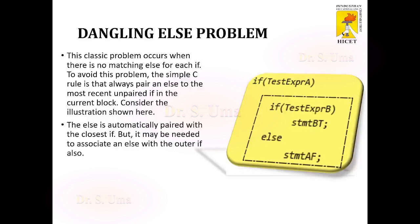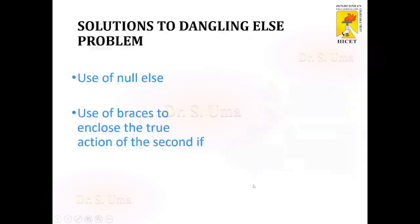The dangling else problem is that, take for example, we are having a statement like: if test expression A, then if test expression D, statement Bt, else statement AF. So here, statement AF and this else are with respect to test expression A, whereas we have this statement AF combined along with the previous if statement. So this is wrong, and how we can solve this is shown in the next slide.